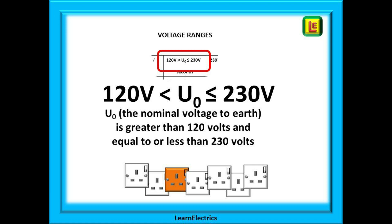It is not the voltage you measure — it is the assumed voltage. We always assume 230 volts for all of our calculations, even if the circuit measures 240 volts. So this arrangement of symbols is saying: U0, the nominal voltage between line and earth, is greater than 120 volts and equal to or less than 230 volts. Greater than 120 volts means 121 volts or above; equal to or less than 230 volts means anything up to and including 230 volts.